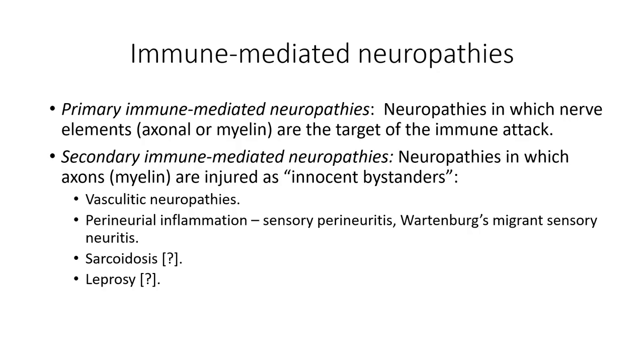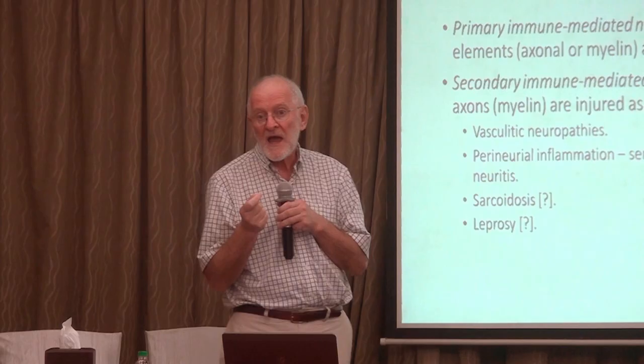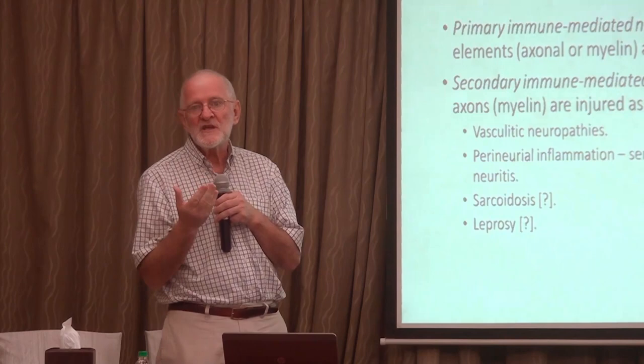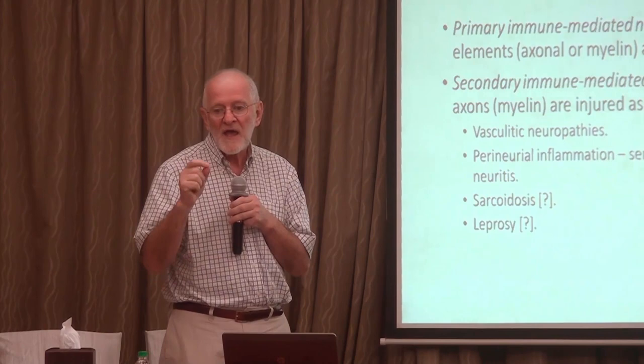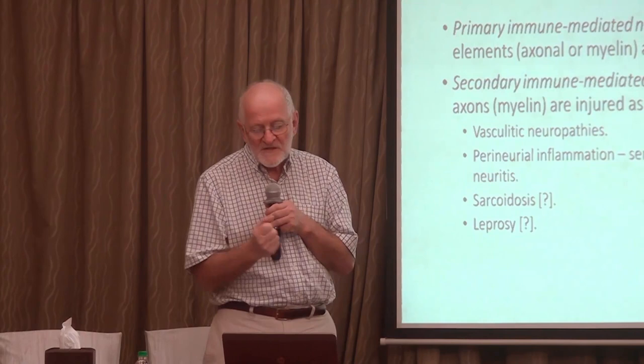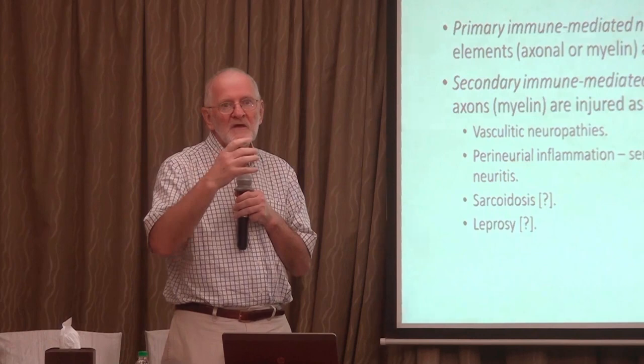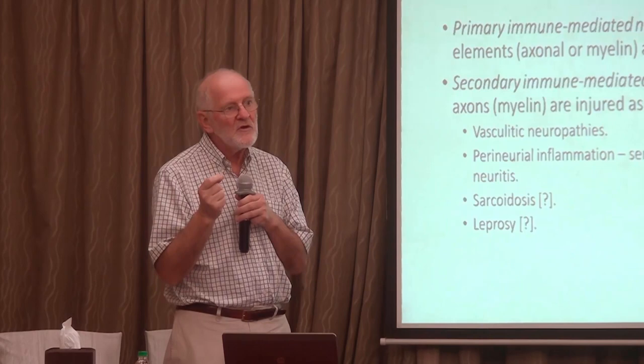Immune-mediated neuropathies may be primary immune-mediated disorders in which some component of the nerve is the target for the immune attack. Most commonly it is the myelin sheath, but we are now starting to learn that there are antigens particularly around the node, but also other as yet unidentified axonal antigens, that can be the target. We tend to forget about the secondary immune-mediated neuropathies in which an attack on some non-neural target may result in damage to the nerve as an innocent bystander, and by far the commonest of those is vasculitis.